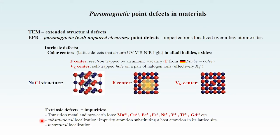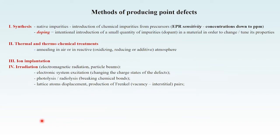How are point defects produced in materials and why are they so important? There are several methods to produce point defects; I will insist on synthesis. By synthesis, very often a material contains native impurities, mainly from precursors. As EPR is a very sensitive technique, such impurities can be detected even at very low concentrations, even below 1 ppm. This information is very important as impurities can change the material properties. This is why doping is one of the most important approaches to search for new material properties, and this is one of the main research topics in our group.